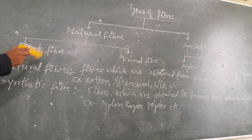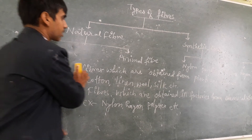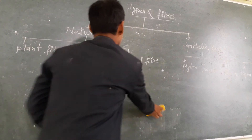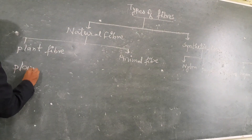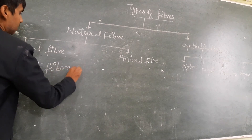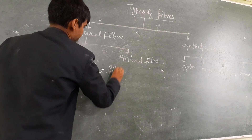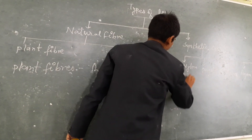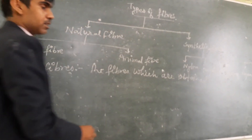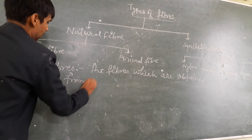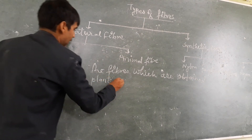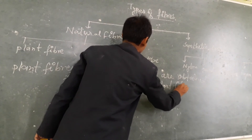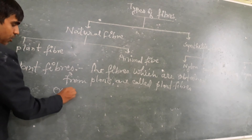This is called animal fiber and this is called plant fiber. Plant fibers are the fibers which are obtained from plants. Examples: cotton and linen.